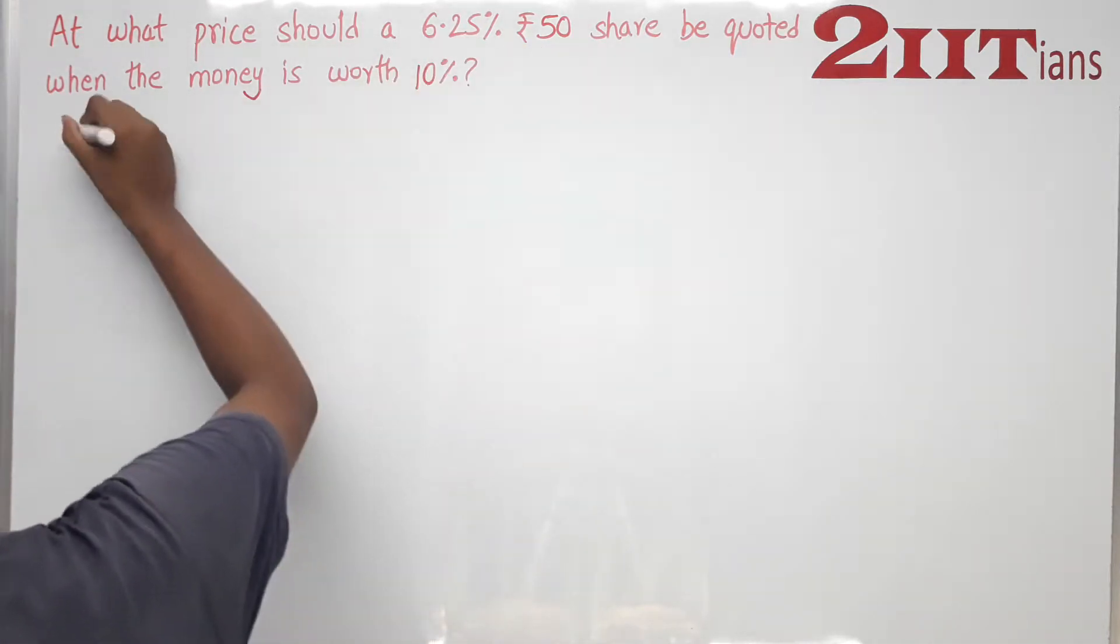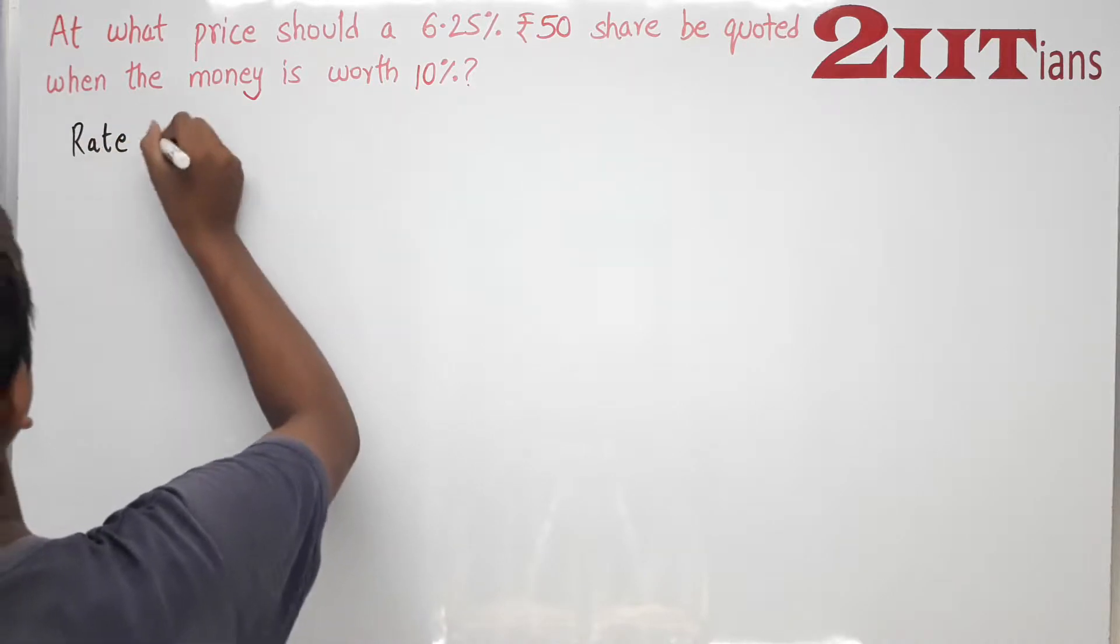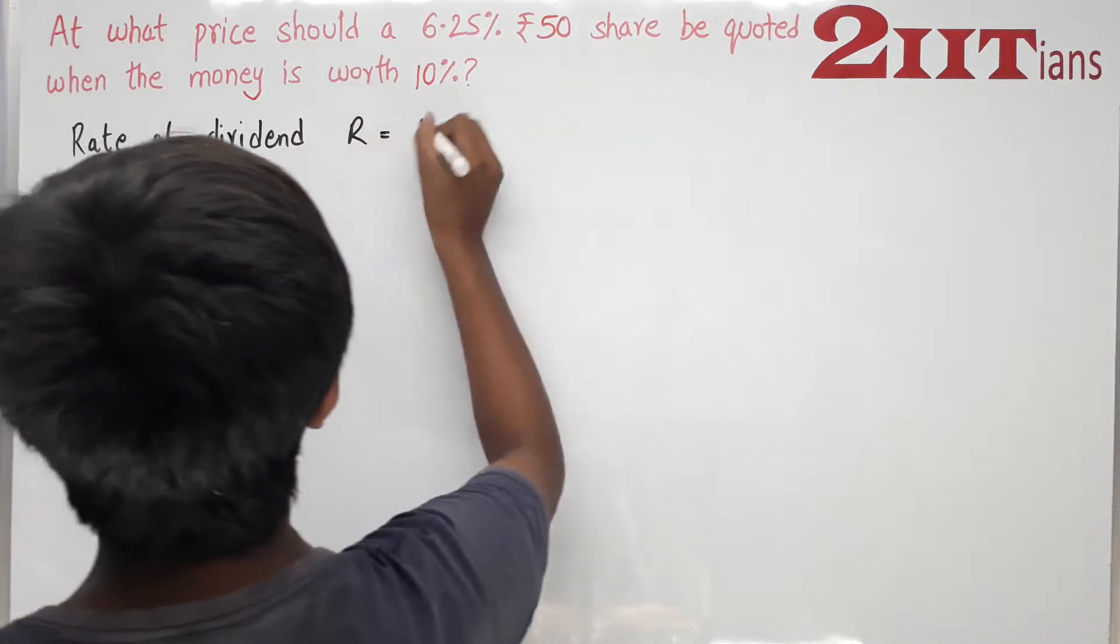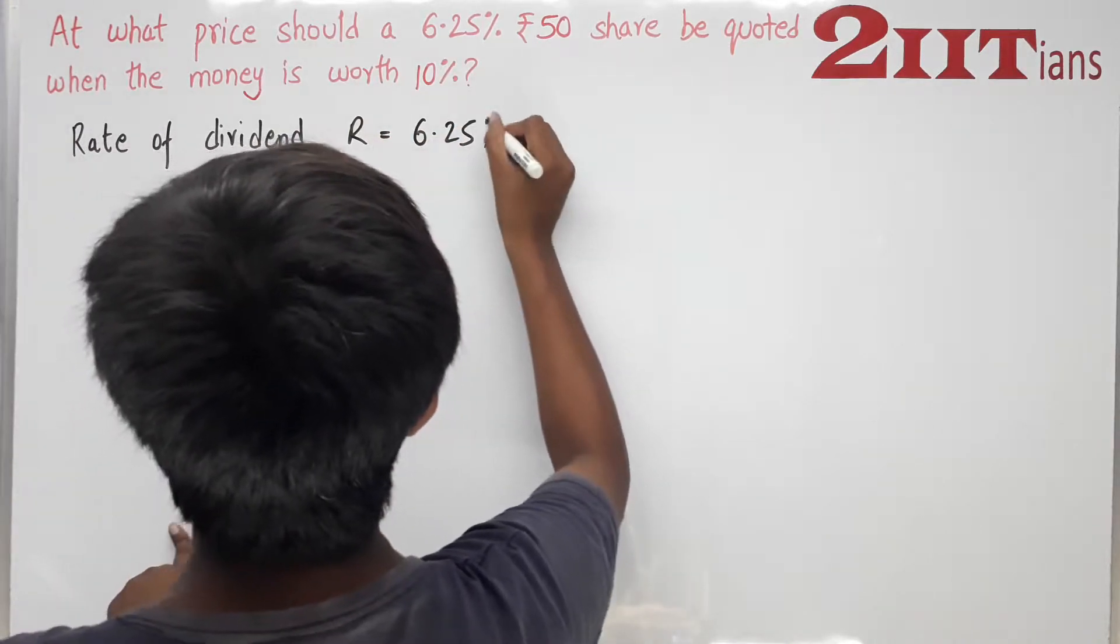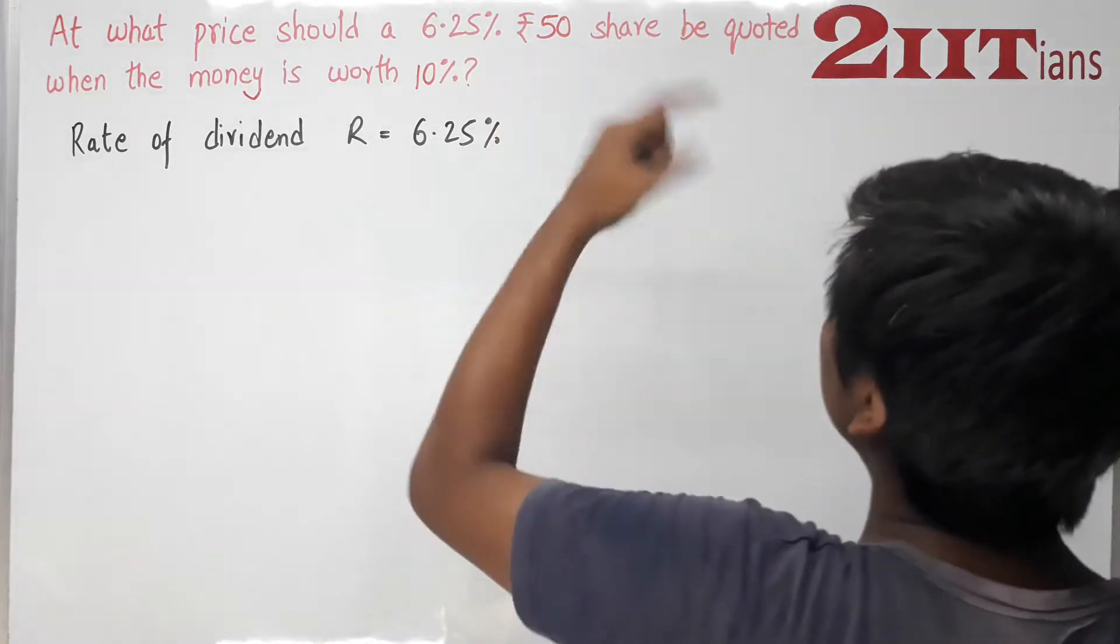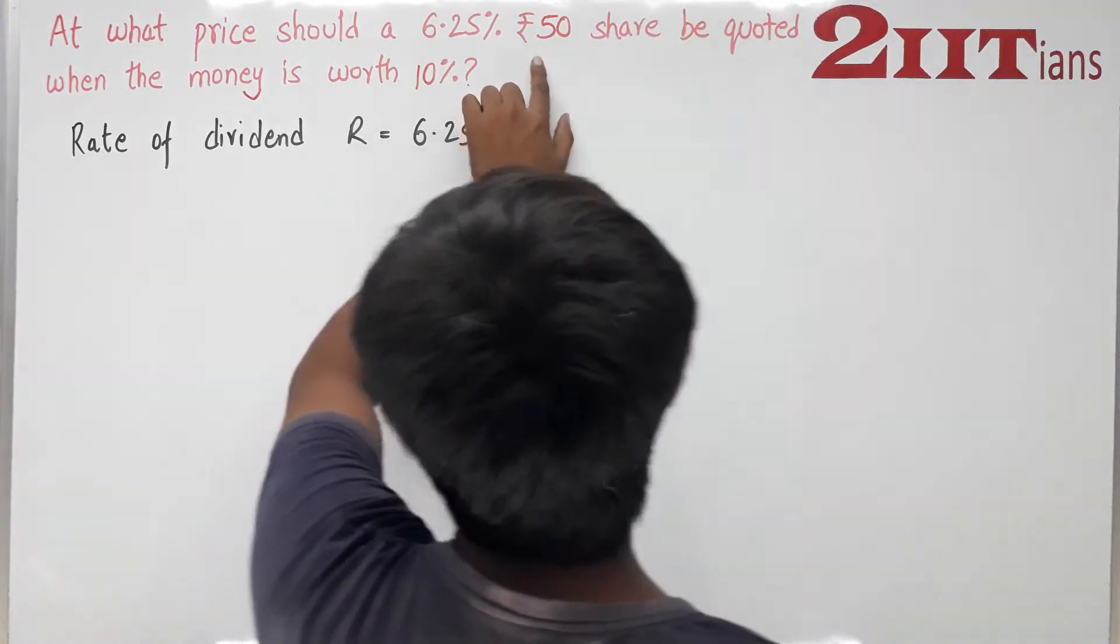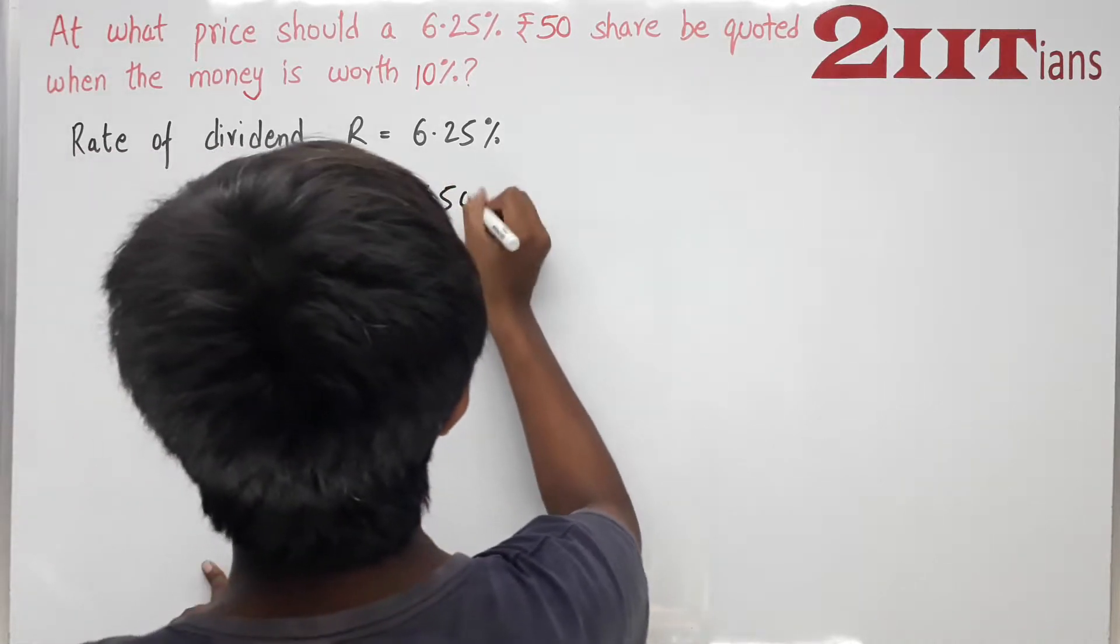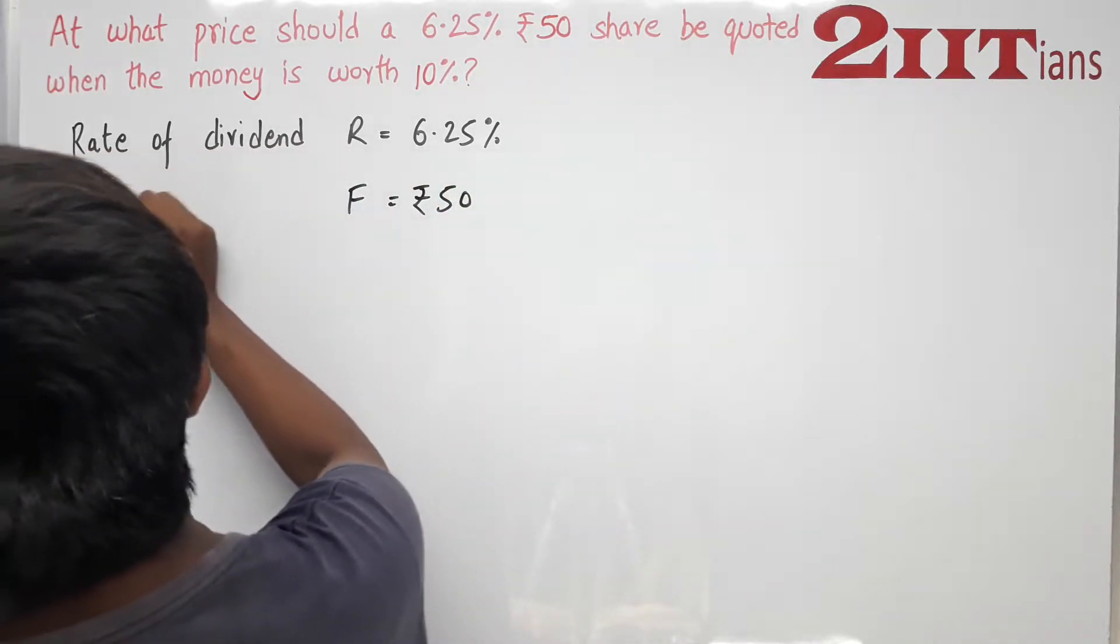We are talking about the rate of dividend, R is given as 6.25%. This is the quote value, which is the market value. So this is fixed, Rs. 50 is the face value. This is the face value.